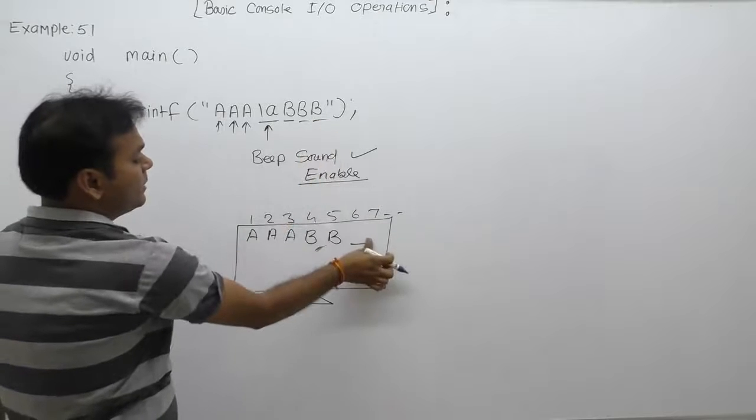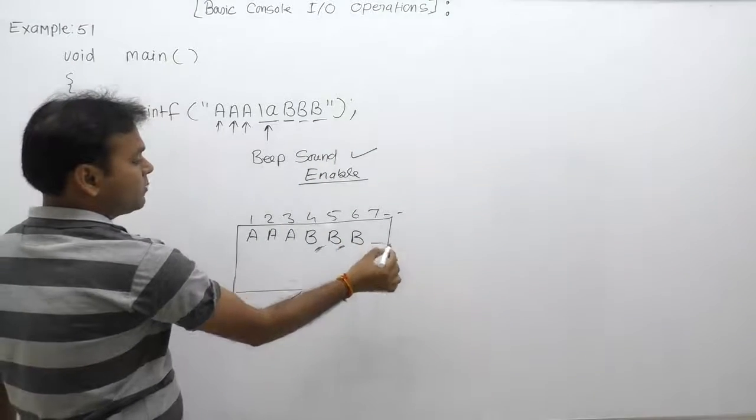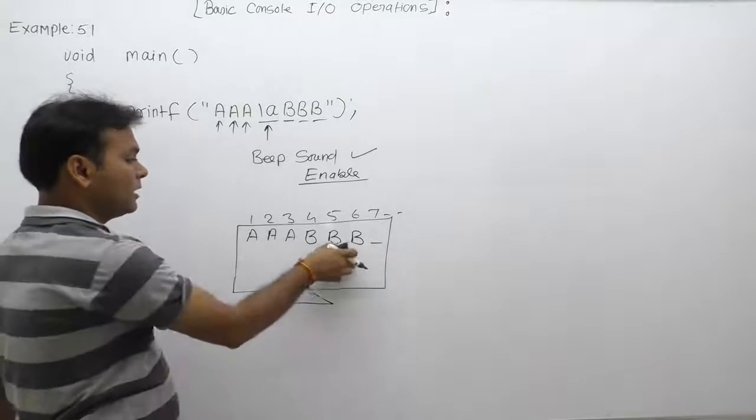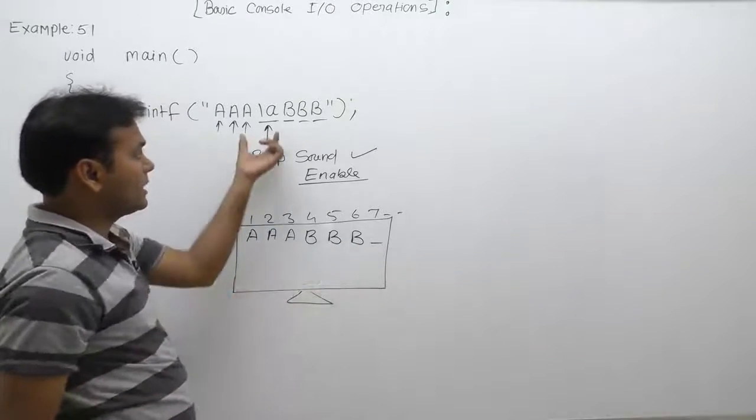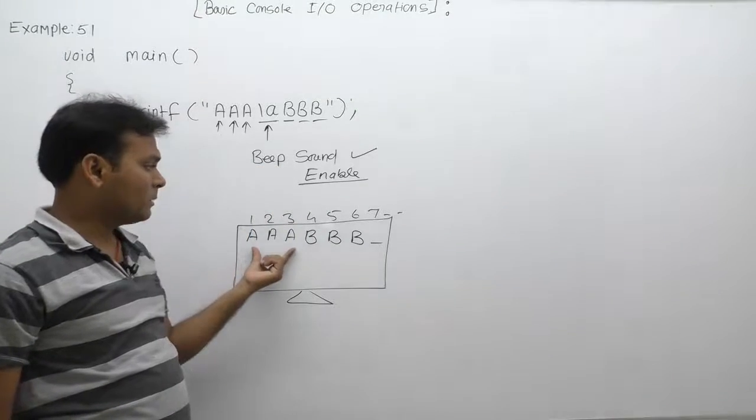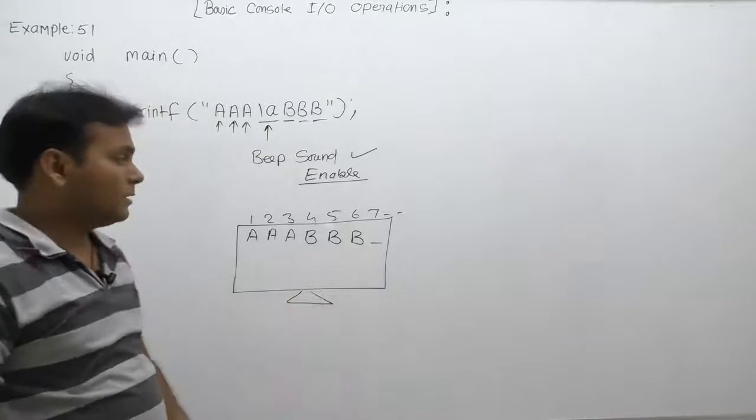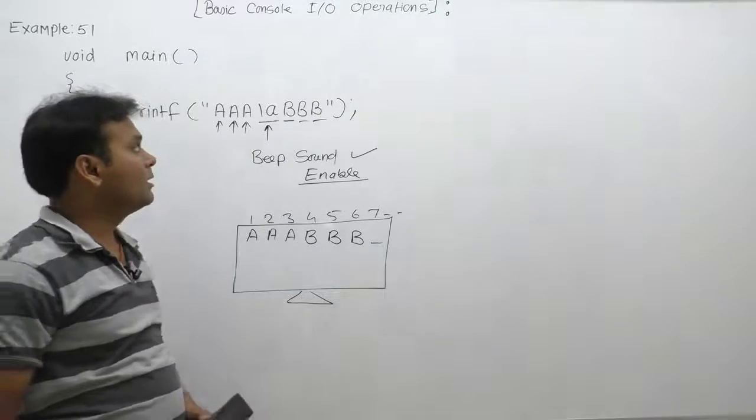Then it will print 'b', and the cursor will be available on the sixth position. Again it will print 'b', then the cursor will be available on the next position or seventh position. This is the final output of this program: slash a is not visible, it will simply generate sound, and the displayed message is triple 'a' continuously, triple 'b' without any space or new line.